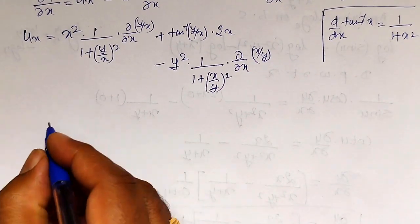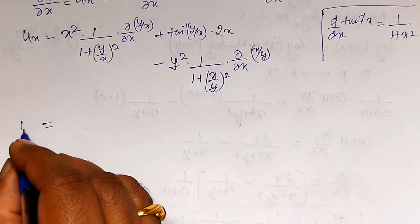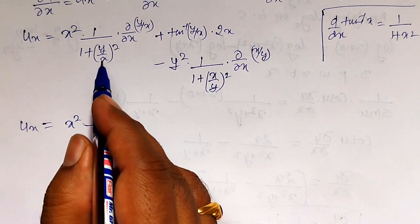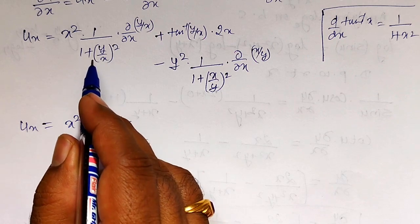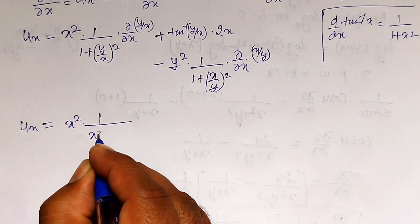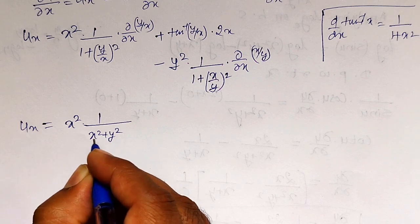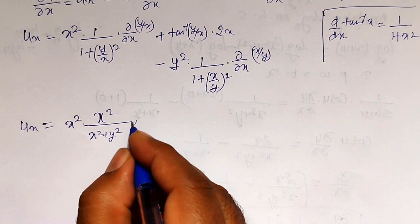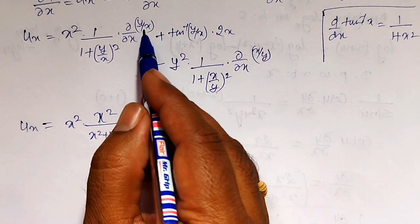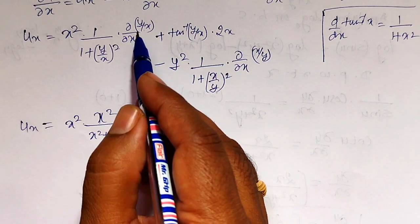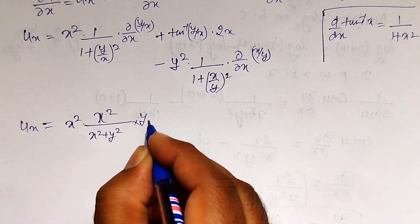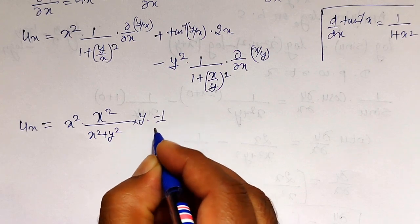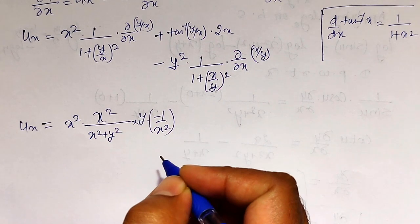Simplifying: u_x equals x square into 1 divided by — LCM among these two is x square, therefore I can write it as x square plus y square, whole divided by x square. Reciprocating, it becomes x square into x square divided by x square plus y square, into the partial differentiation of y by x with respect to x. Since y is constant, 1 by x remains and partial differentiation of 1/x is minus 1 by x square, giving minus y by x square.